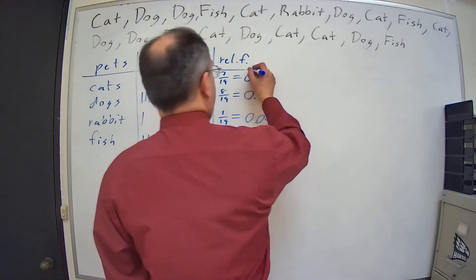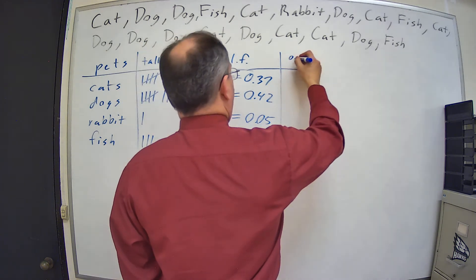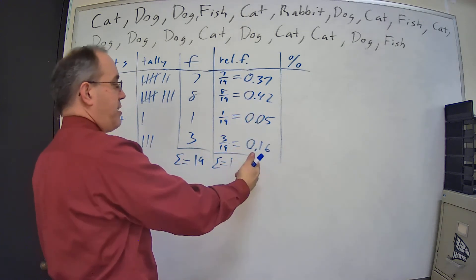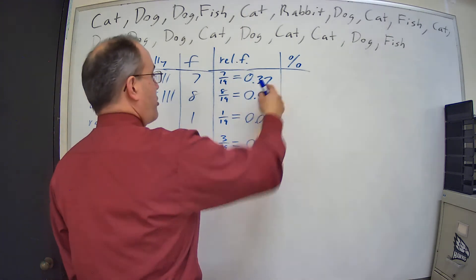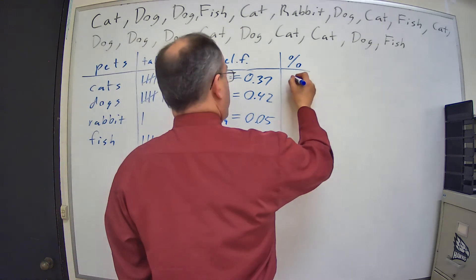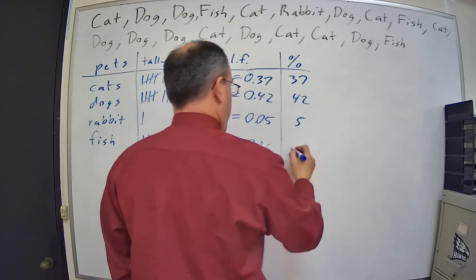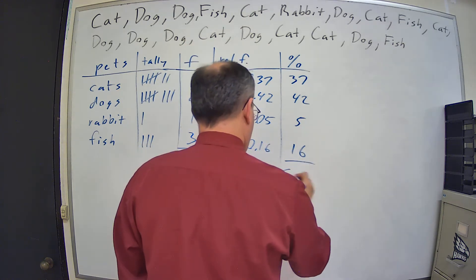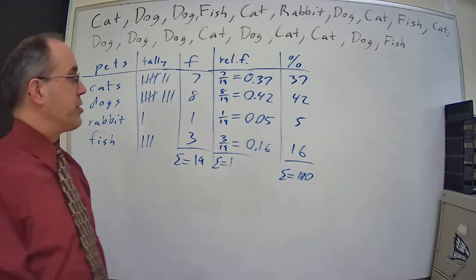So there's our relative frequencies, and then we're going to find our percents. Our percents are just the decimal turned into a percent, multiplying by 100, or shifting it over two places. So we have 37, 42, 5, and 16, which adds up to 100, which is good.